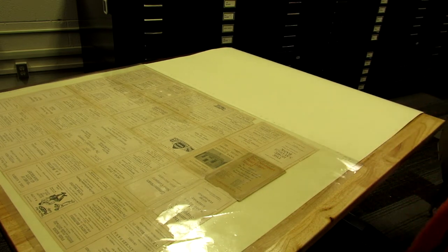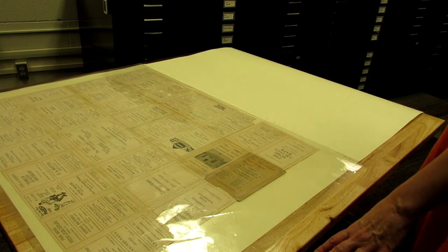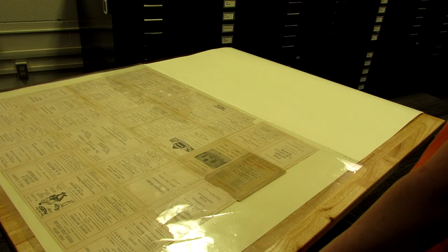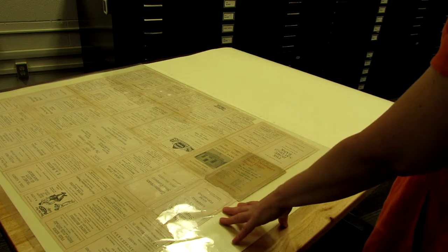Although some maps like this one are protected by a mylar enclosure, meaning they're encapsulated, the paper within can still be damaged by creasing or rolling. So do take care.